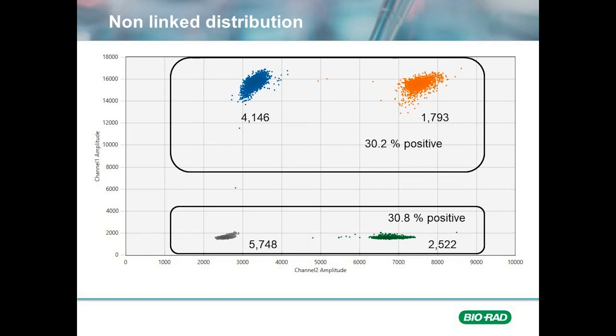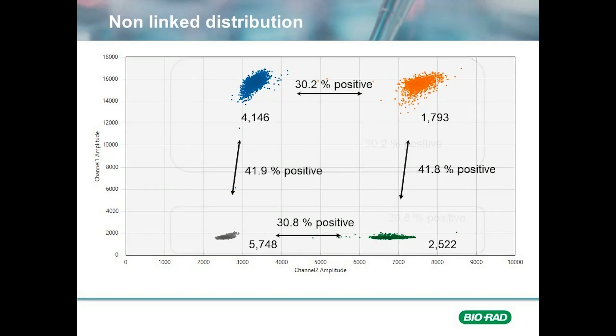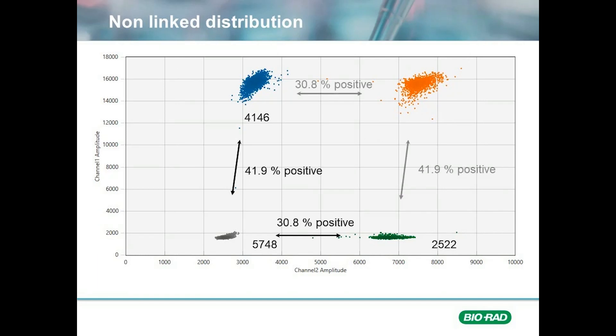The ratio of positive droplets for HEX in the absence of a FAM target is 30.8%, and 30.2% with a FAM target present. Because the targets for FAM and HEX are not linked, they are randomly distributed in a uniform fashion. The ratio of positive to total droplets for any target, either FAM or HEX, is constant whether a second target is being co-amplified in that droplet or not. Since the ratio of positives is maintained in both axes, having information on any three of the clusters allows us to determine these ratios and calculate the expected value of the fourth.